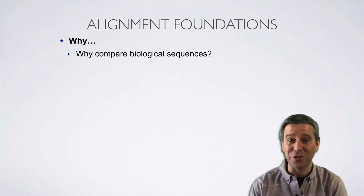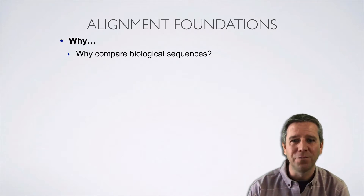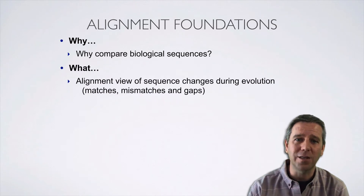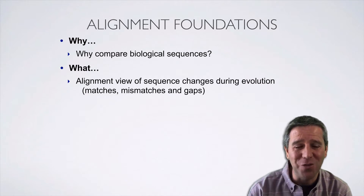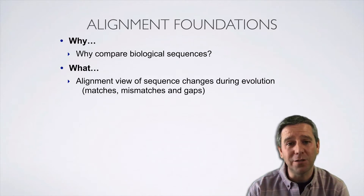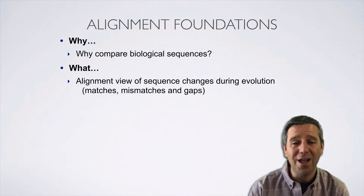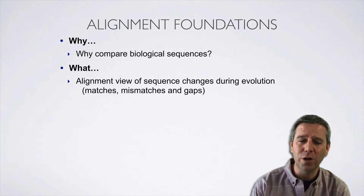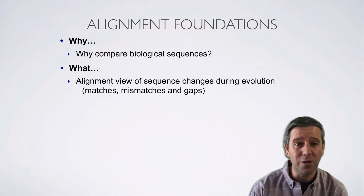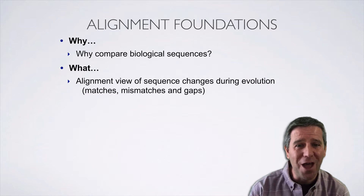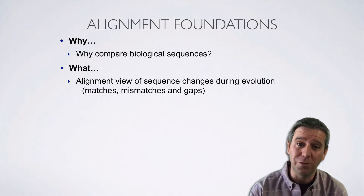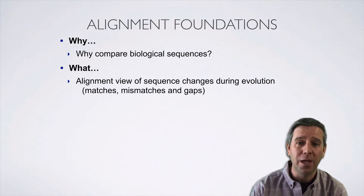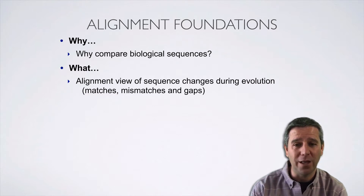For the what, it's very useful to take a step back and consider what alignments are at their core trying to convey. For homologous sequences, where alignments are actually most useful, I'll show you how alignments are trying to capture and display in a succinct way the sequence of changes that happened during their descent from a common ancestor. We'll discuss what these terms mean — particularly matches, mismatches, and gaps — in that context of capturing the descent from a common ancestor.